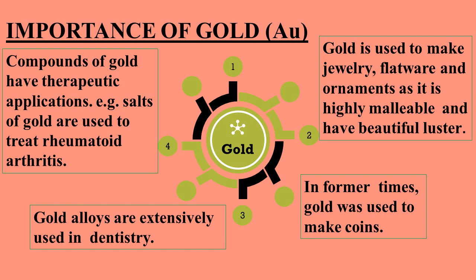Importance of gold (formula: Au): gold is highly malleable and has beautiful luster, so it is used to make jewelry, flatware, and ornaments. Flatware refers to objects used for eating. In former times, gold was used to make coins. Gold alloys are extensively used in dentistry for filling teeth. Compounds of gold such as gold salts have therapeutic applications and are used to treat diseases like rheumatoid arthritis.